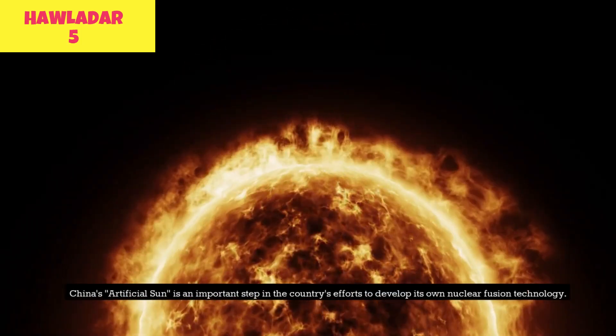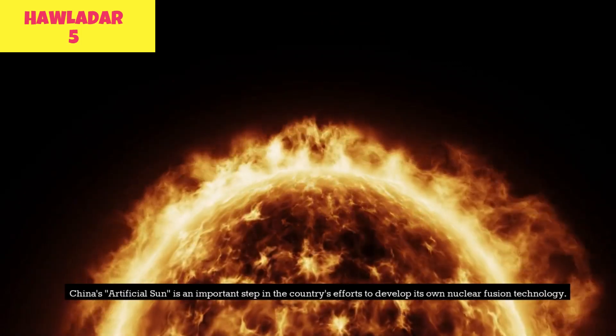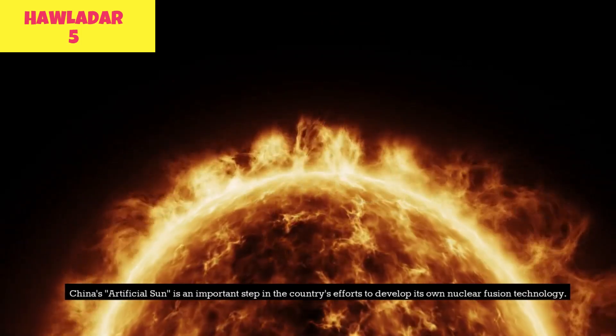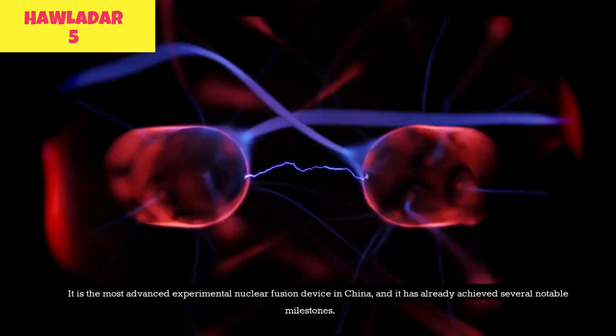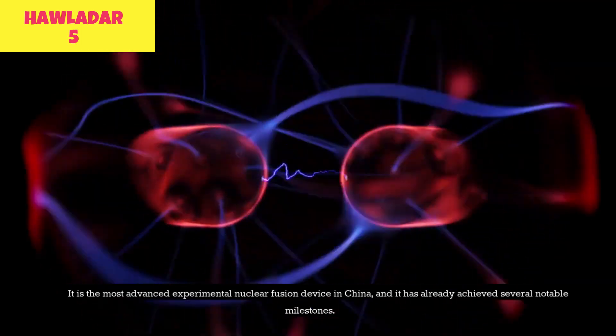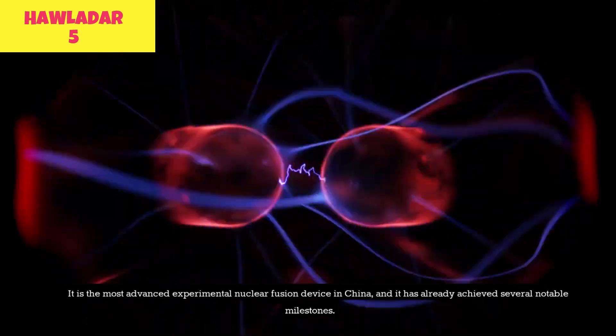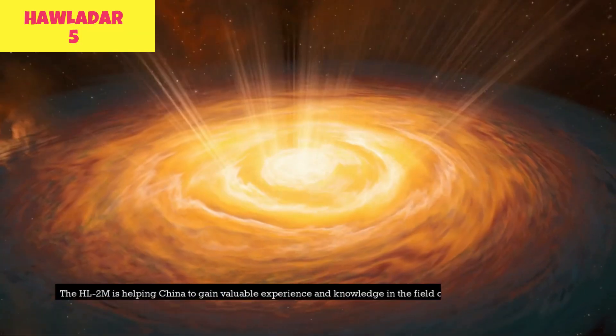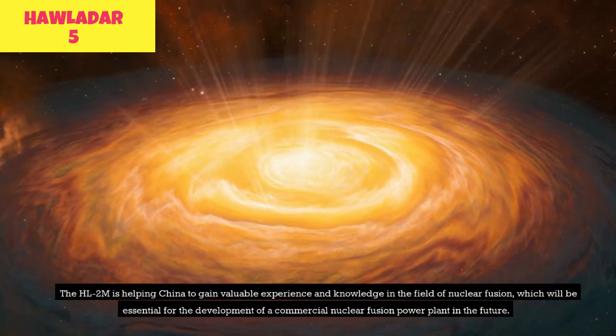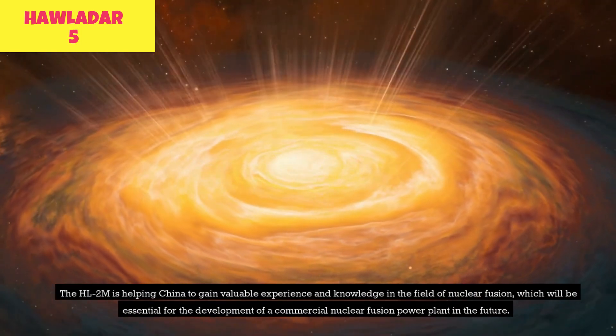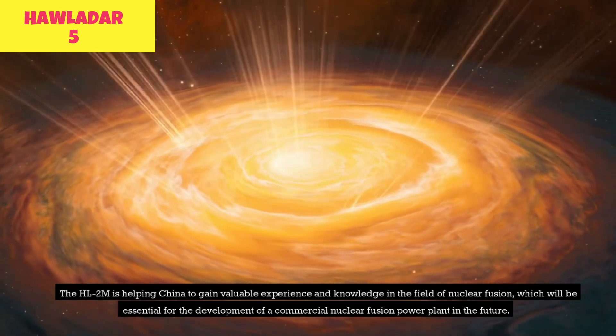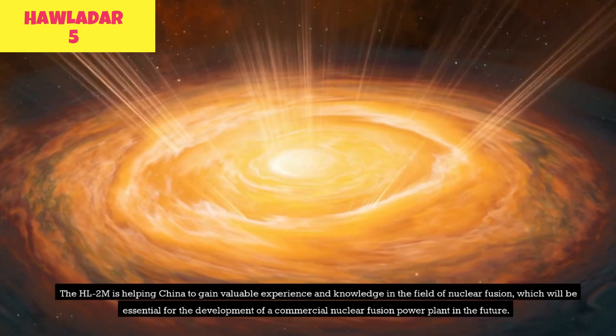China's artificial sun is an important step in the country's efforts to develop its own nuclear fusion technology. It is the most advanced experimental nuclear fusion device in China, and it has already achieved several notable milestones. The HL2M is helping China to gain valuable experience and knowledge in the field of nuclear fusion, which will be essential for the development of a commercial nuclear fusion power plant in the future.